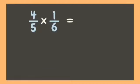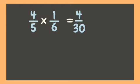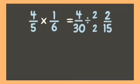Four-fifths times one-sixth. Four times one is four, five times six is thirty. Now let's simplify our answer. Four and thirty can be divided by their common factor two. Four divided by two is two, thirty divided by two is fifteen. Our final answer is two-fifteenths. Now let us try the cancellation method.